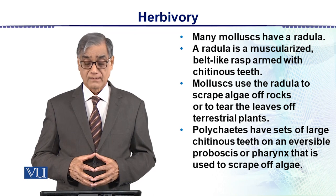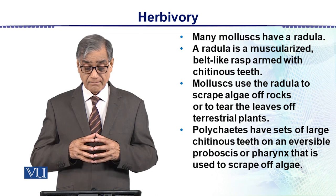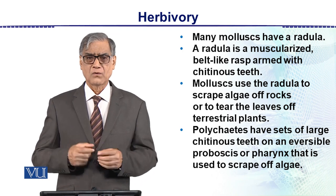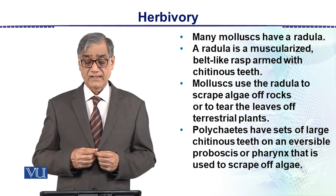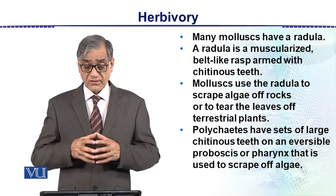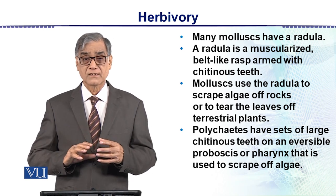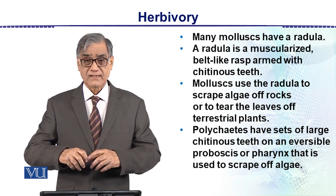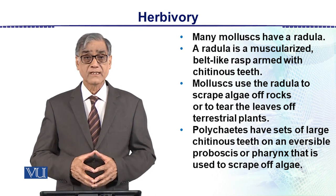Many mollusks have a radula. The radula is a muscularized, belt-like rasp armed with chitinous teeth — like a tongue with many tooth-like chitinous structures on it. Mollusks use the radula to scrape algae off rocks; the algae growing on rocks is scraped off by the radula and taken into the mouth.